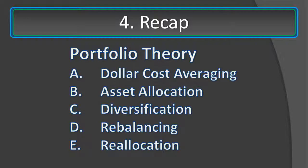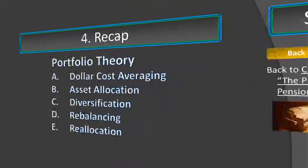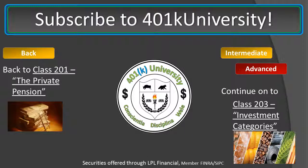E: Reallocation — the practical application of asset allocation and diversification over time to ensure risk remains appropriate to your timeline to your goal. We will dive deeper into investments in our next class as well. Thank you for your time and attention. Our next class in this series is Class 203, Investment Categories. Intermediate and Advanced Class Attendees should all visit this class next. We hope to see you there.